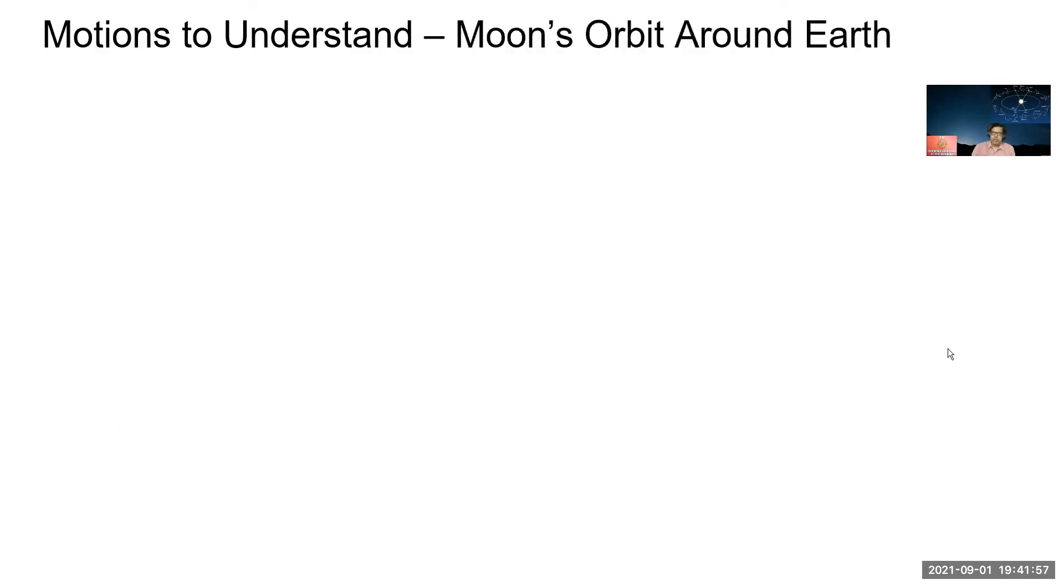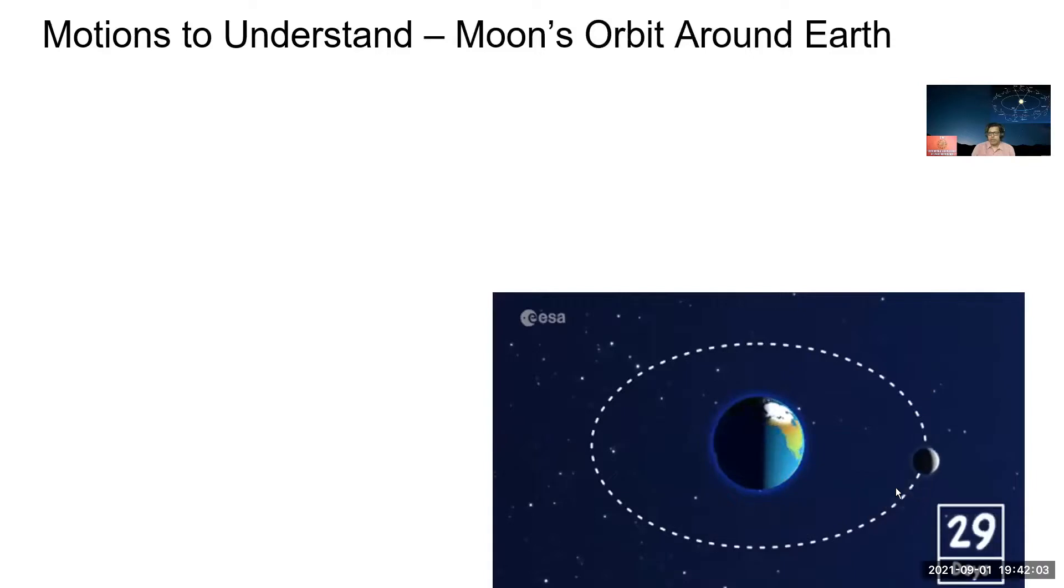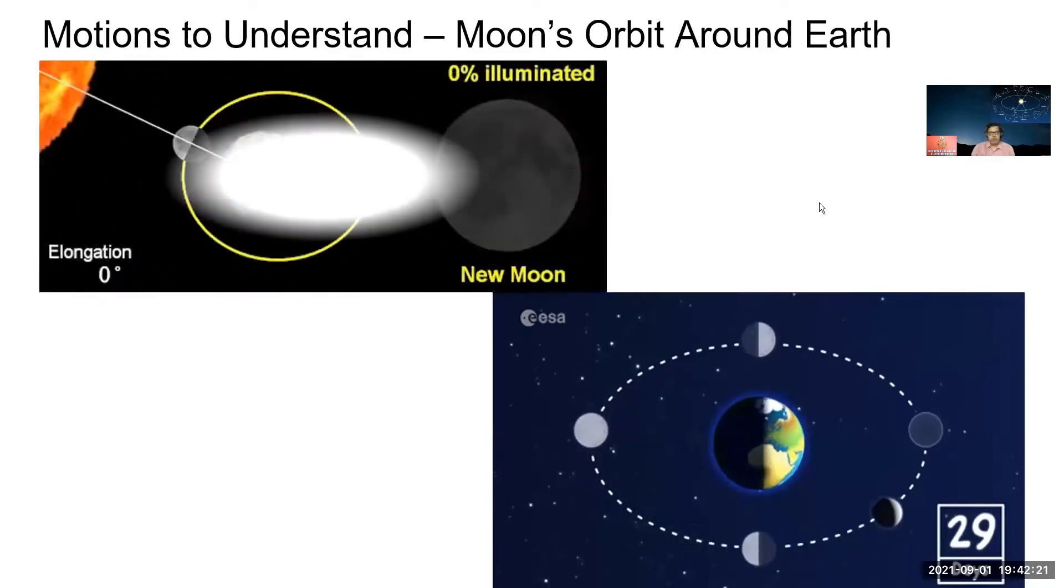And this is the moon's orbit that we all know. Depending on how it moves, you find the moon's reflection from the sun changes. That's why here, when it's behind the Earth, it's no moon. And then slowly you see the crescent shape and then becomes full moon. This is another representation of the same.